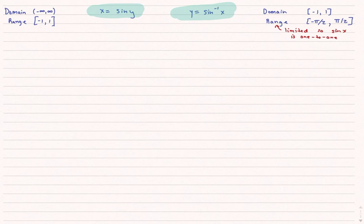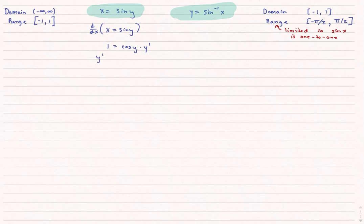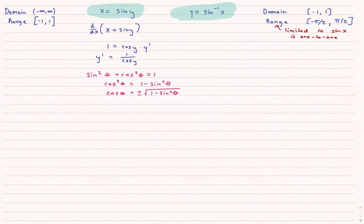So let's see if we can use this to come up with our derivative. We're going to take the derivative of both sides: the derivative of x is simply 1, and the derivative of sine y is cosine y times y prime. We need to do the chain rule because y is a function of x. Solving for y prime, I get y prime equals 1 over cosine y. The trouble is I don't want this in terms of y, I want it in terms of x. So I'm going to use one of my trigonometric identities: sine squared theta plus cosine squared theta equals 1. Solving for cosine theta, I get plus or minus the square root of 1 minus sine squared theta.